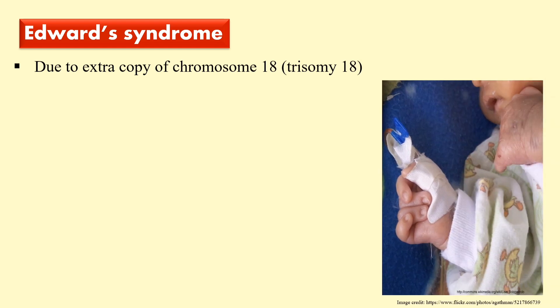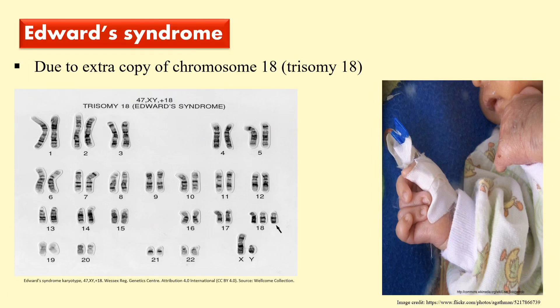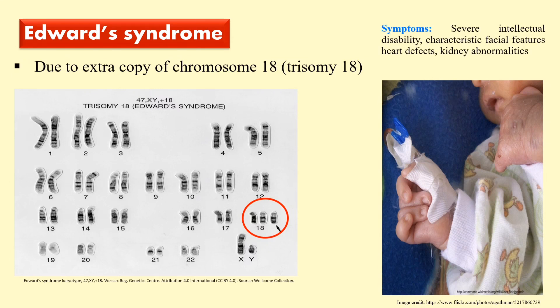The next autosomal syndrome is Edwards syndrome, and this is due to the presence of an extra copy of the 18th chromosome — trisomy 18. If you look into the karyotype, you can see the 18th chromosome is present in three copies. Due to this extra 18th chromosome, certain symptoms develop, which include severe intellectual disability, unusual facial characteristics, heart defects, and kidney abnormalities.